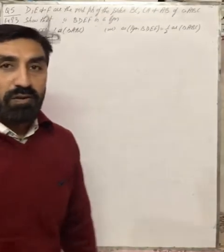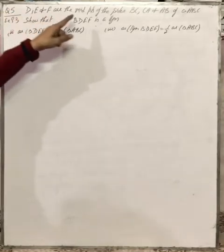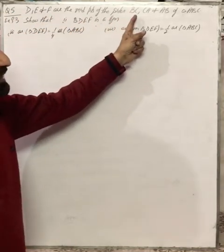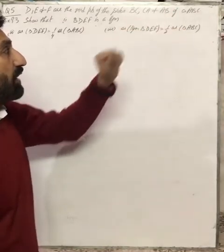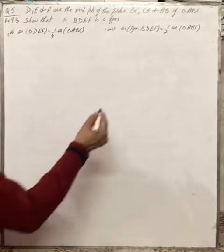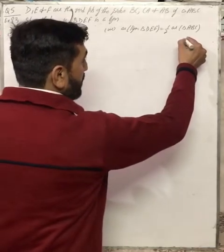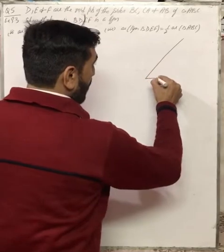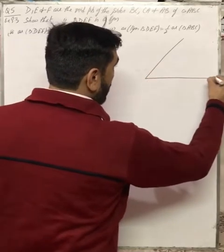Hello students, this is your math teacher Sanjeev Sikri. Today we are going to take a topic from Standard 9, Chapter: Area of Parallelograms and Triangles. Let's read the question first before solving it. D, E and F are the midpoints of the sides BC, CA and AB of triangle ABC. Let's draw the diagram first before reading further.